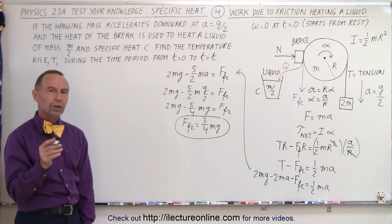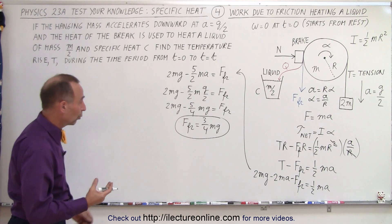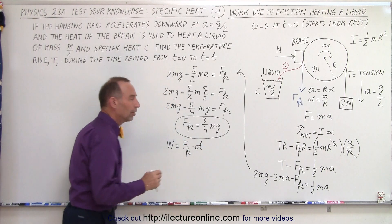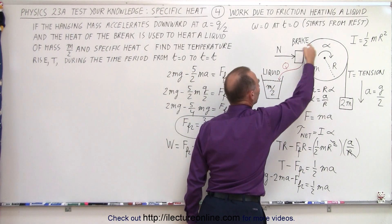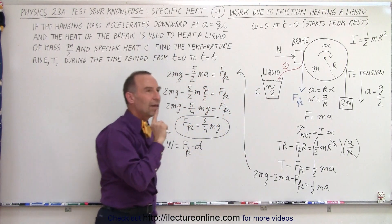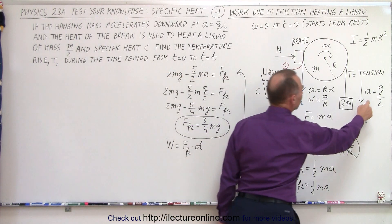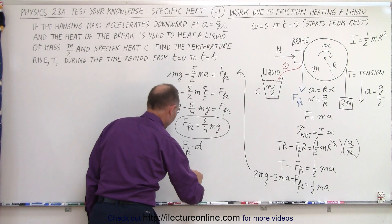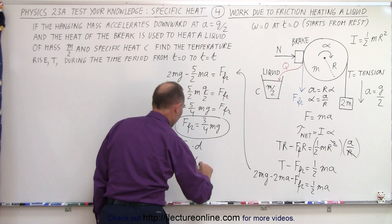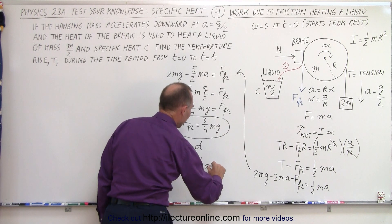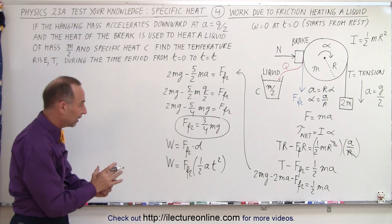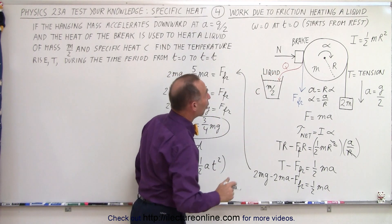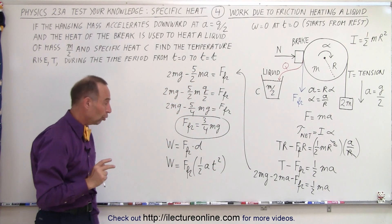Now we've found the friction force caused by the brake. Now we need to find the work done by the friction force — in other words, the heat generated equals the work done. The work done equals the force, in this case the friction force, times the distance traveled. That means the tangential distance of the wheel as it travels from t equals 0 to t equals T, accelerating at g divided by 2. So the work equals the friction force times the distance, which is one half times the acceleration times t squared. One half at squared gives us the distance, since the initial velocity equals 0.